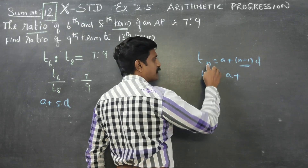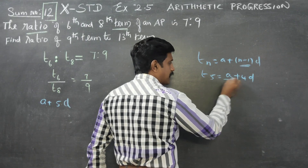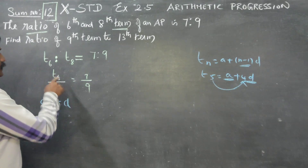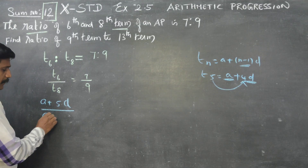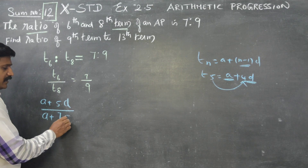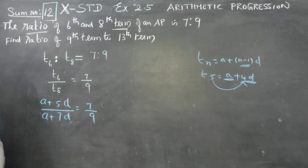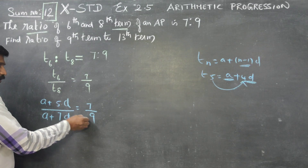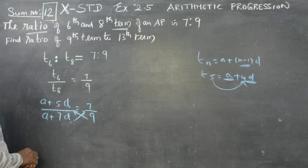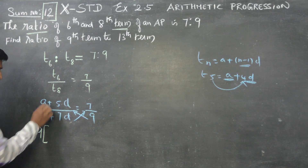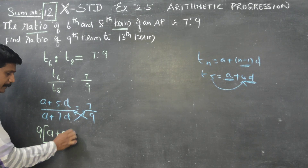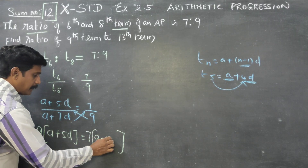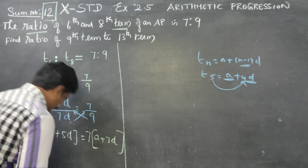Substituting: A plus 5D by A plus 7D is equal to 7 by 9. Now cross multiply: 9 into bracket A plus 5D is equal to 7 into bracket A plus 7D.